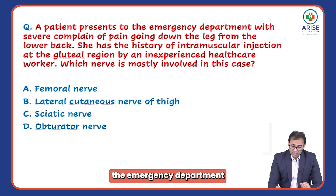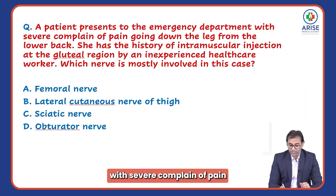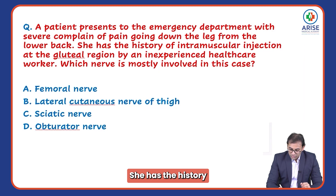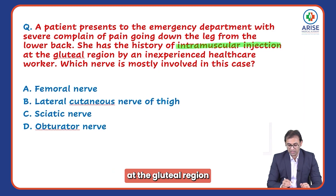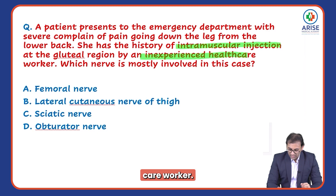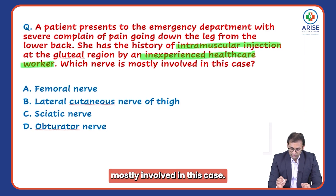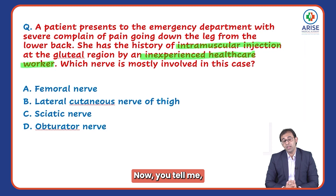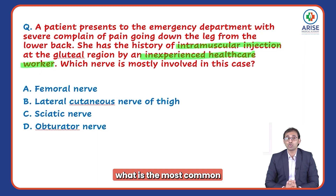A patient presents to the emergency department with a severe complaint of pain going down the leg from the lower back. She has a history of intramuscular injection at the gluteal region by an inexperienced healthcare worker. Which nerve is most involved in this case?